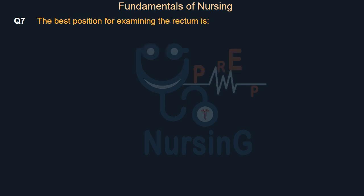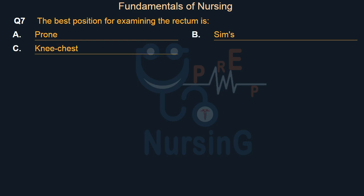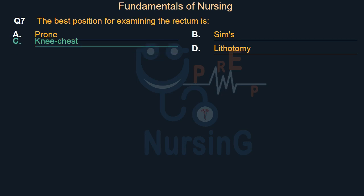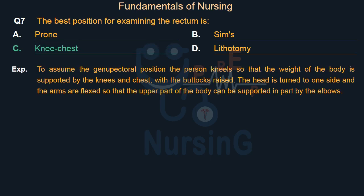The best position for examining the rectum is: Option A — Prone. Option B — Sims. Option C — Knee-chest. Option D — Lithotomy. Right answer is Option C: Knee-chest. To assume the genu-pectoral position, the person kneels so that the weight of the body is supported by the knees and chest, with the buttocks raised, the head is turned to one side, and the arms are flexed so that the upper part of the body can be supported in part by the elbows.